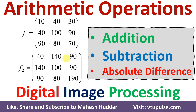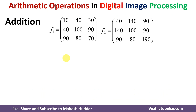Welcome back. In this video I will discuss how we can perform different arithmetic operations like addition, subtraction, and absolute difference on a given fragment of image in digital image processing. We have been given two fragments of images, F1 and F2, with the pixel values, and we need to perform the different arithmetic operations on these two fragments.